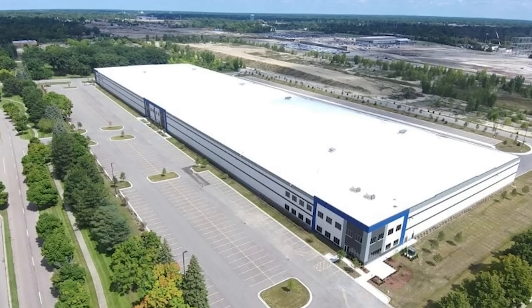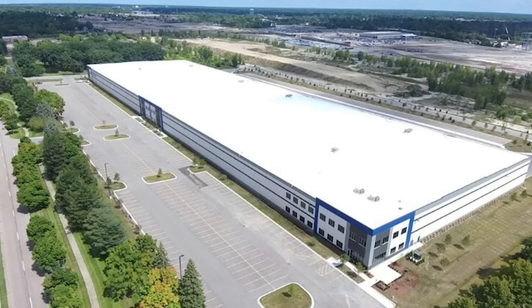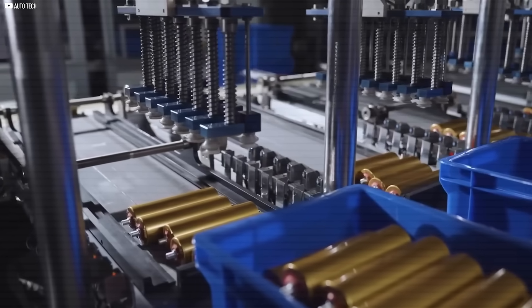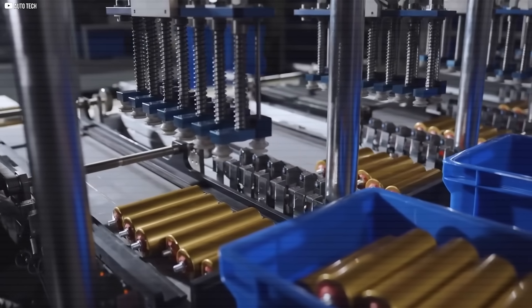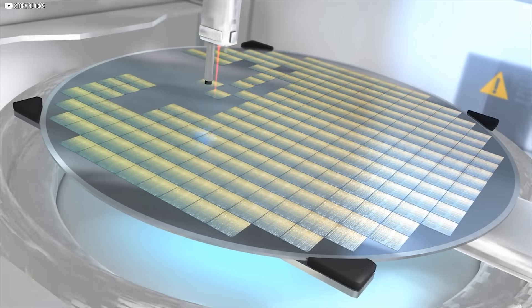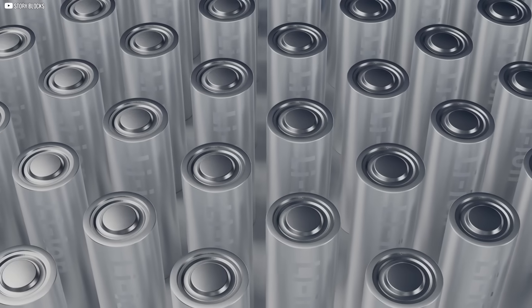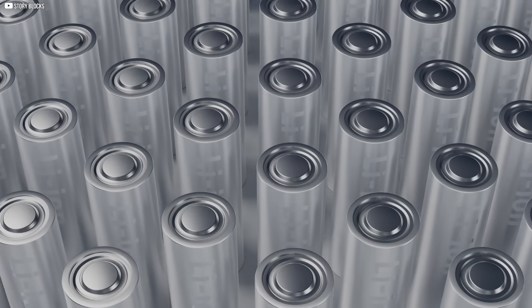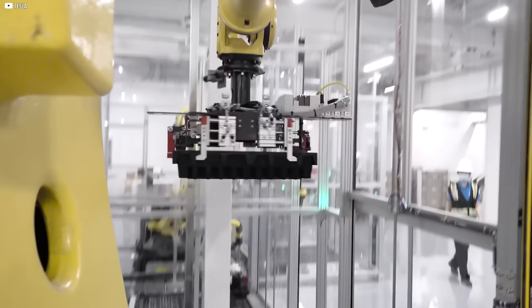They've already set up in Chicago. Now they're building again. This time in Michigan, on the site of an old Buick factory. Backed by government funding, they plan to produce thousands of tons of silicon material each year. It's more than a battery. It's a system. And it's already starting to scale.